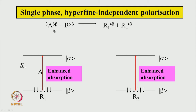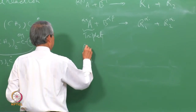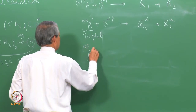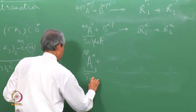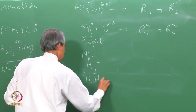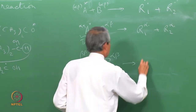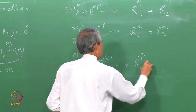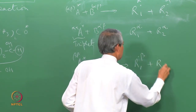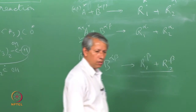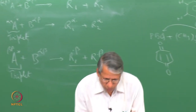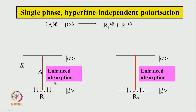Similarly, if the triplet T−1 (beta-beta) reacts with B, the excited triplet beta-beta produces two radicals both with beta spin state, giving polarization seen in the form of enhanced absorptive signal for both radical A and radical B. This is the mechanism that must be taking place to produce the polarized signal.